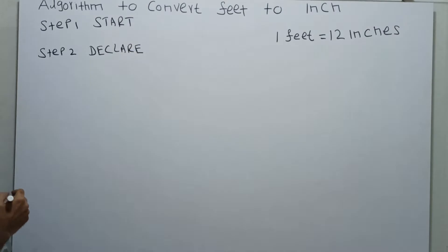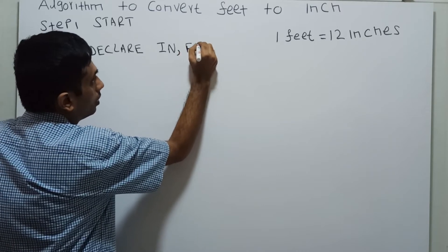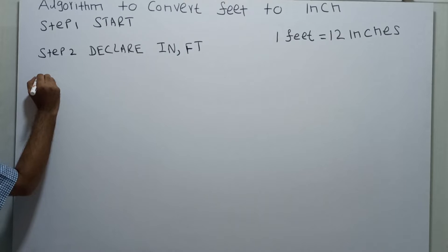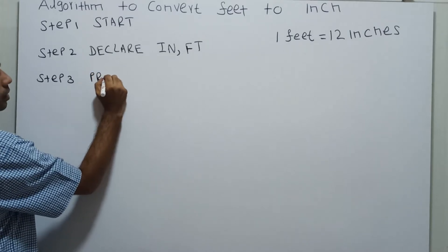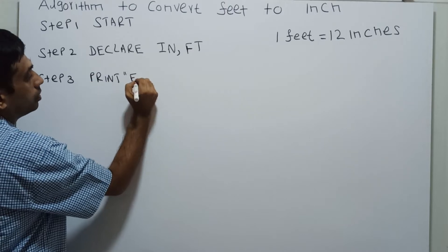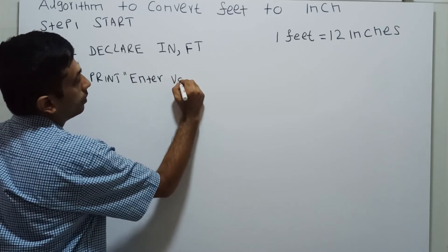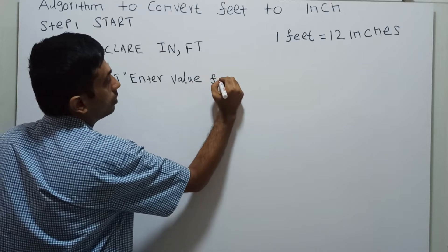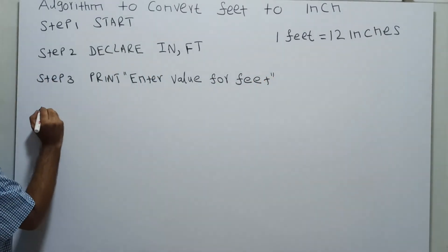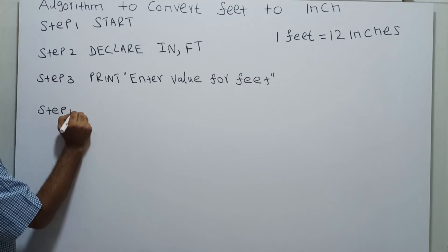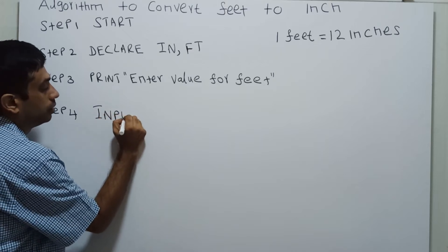Step two: DECLARE IN, FT. I am declaring the variables to store inches and feet. Step three: PRINT 'Enter value for feet'. Step four: INPUT FT.